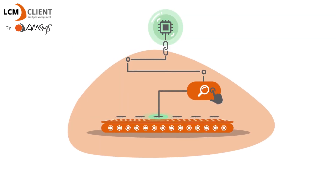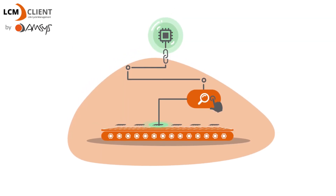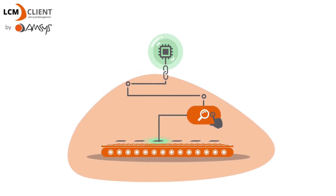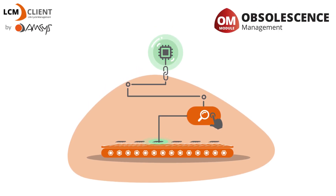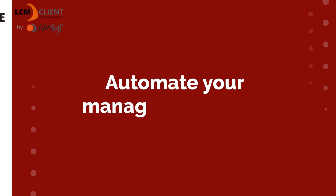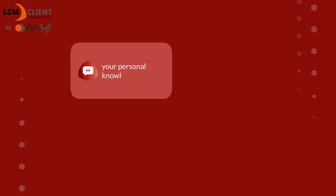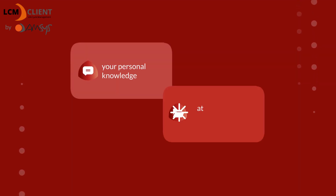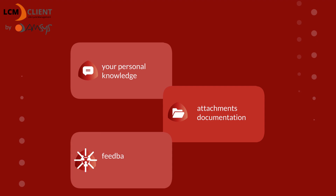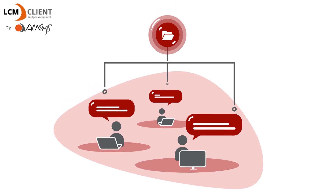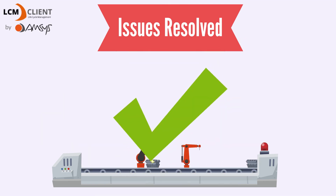Need to find the optimal solution to discontinuation or change notices with full traceability of all actions taken? The Reactive Obsolescence Management module is the perfect match. Automate your management for all obsolescence cases. You can integrate internal information like your personal knowledge, attachments, documentation, and feedback from your colleagues. Your team collaboration will get better and found issues will be resolved faster.